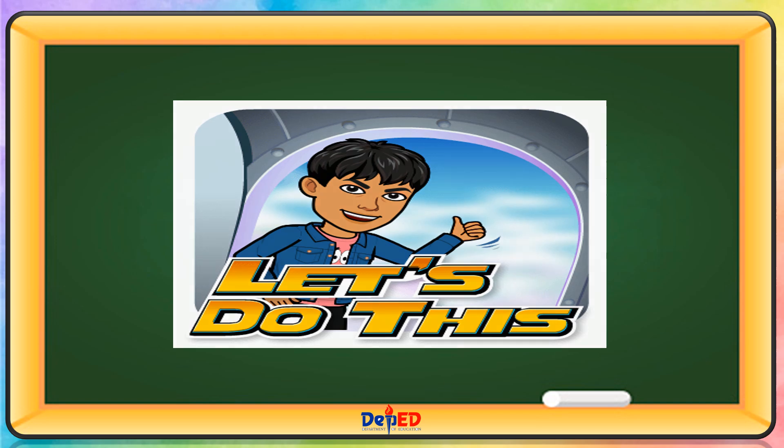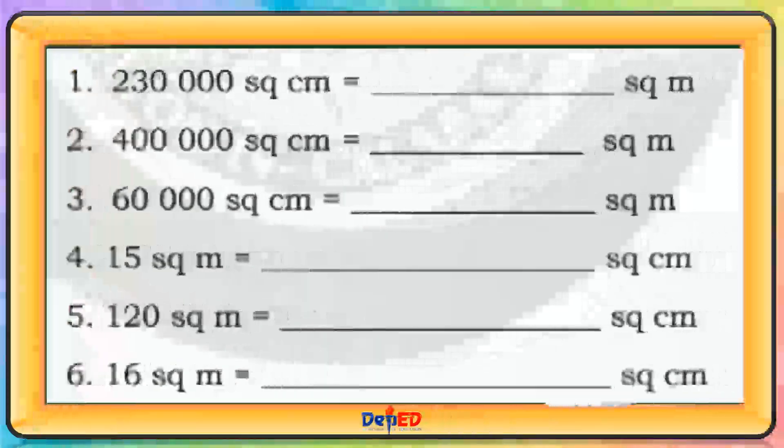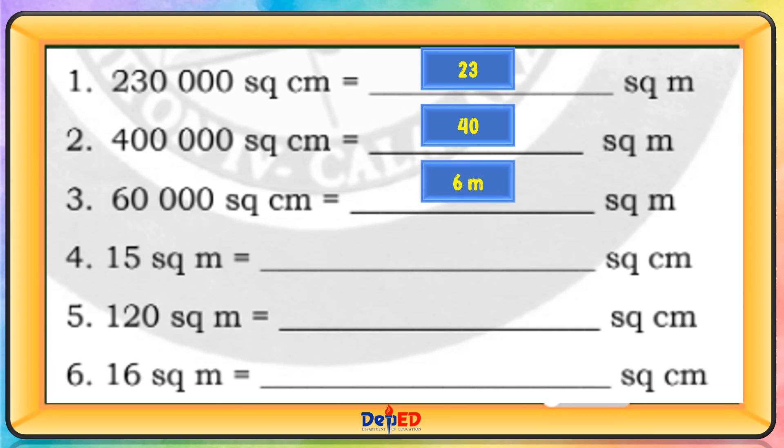Let's do this. Convert the following units. 230,000 square centimeters is equals to 23 square meters. 400,000 square centimeters is equals to 40 square meters. 60,000 square centimeters is equals to 60 square meters.